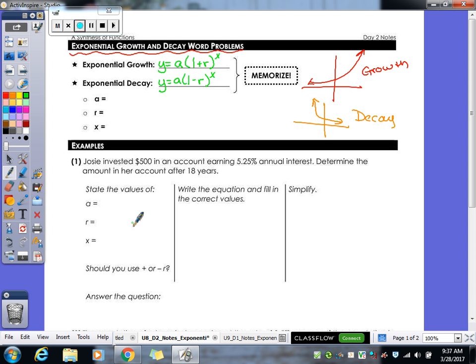As you see my little note there, you guys will need to memorize those two formulas. Because they give you an exponential growth decay formula on your Regents reference sheet, but trust me, just memorize these ones. Your life's going to be so much easier.